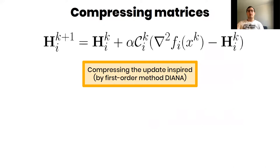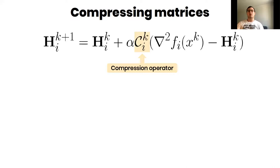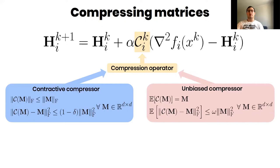Our learning mechanism for matrices is based on Diana Trick. Here C_i^k is compression operator. Our theory supports both main families of compression operators, contracted ones and unbiased ones.